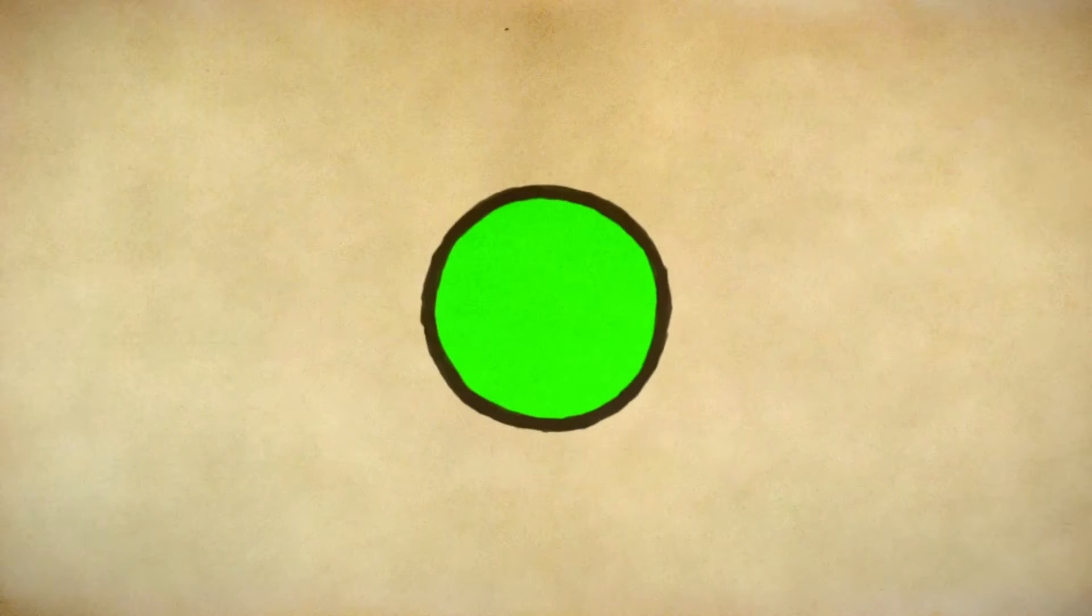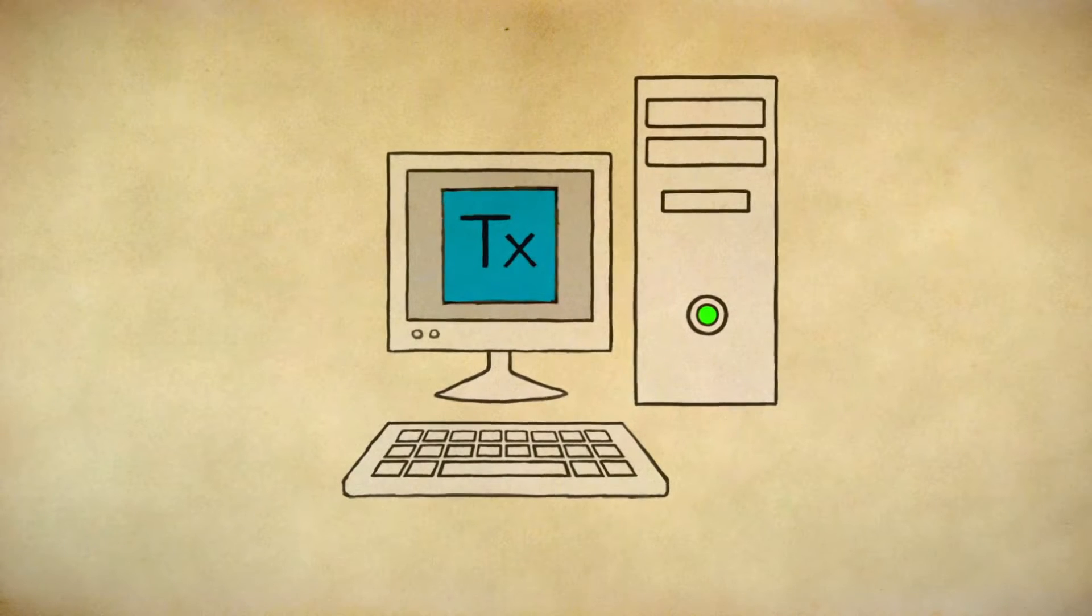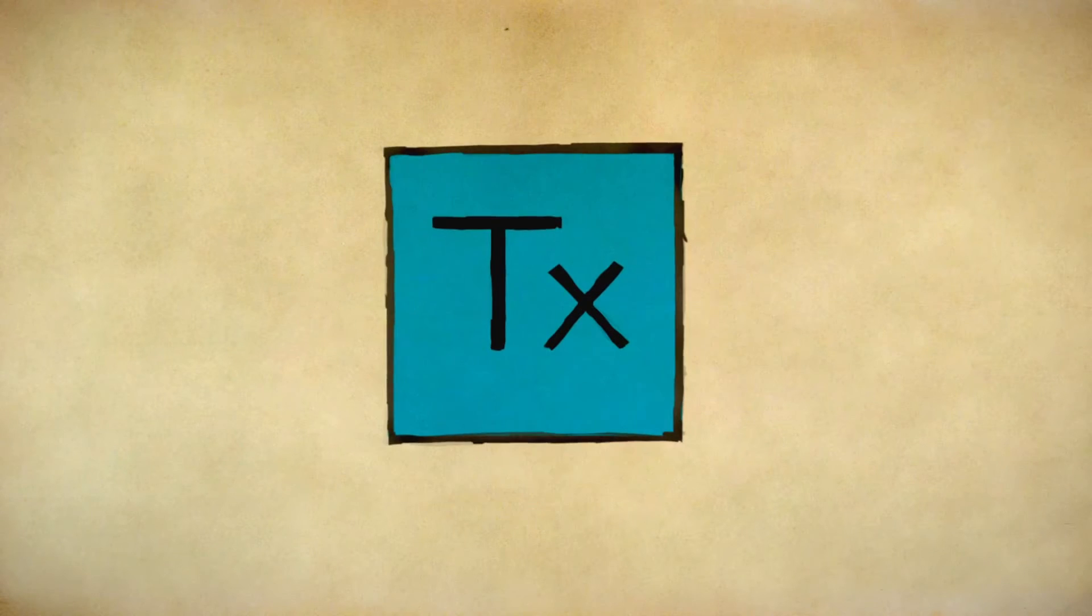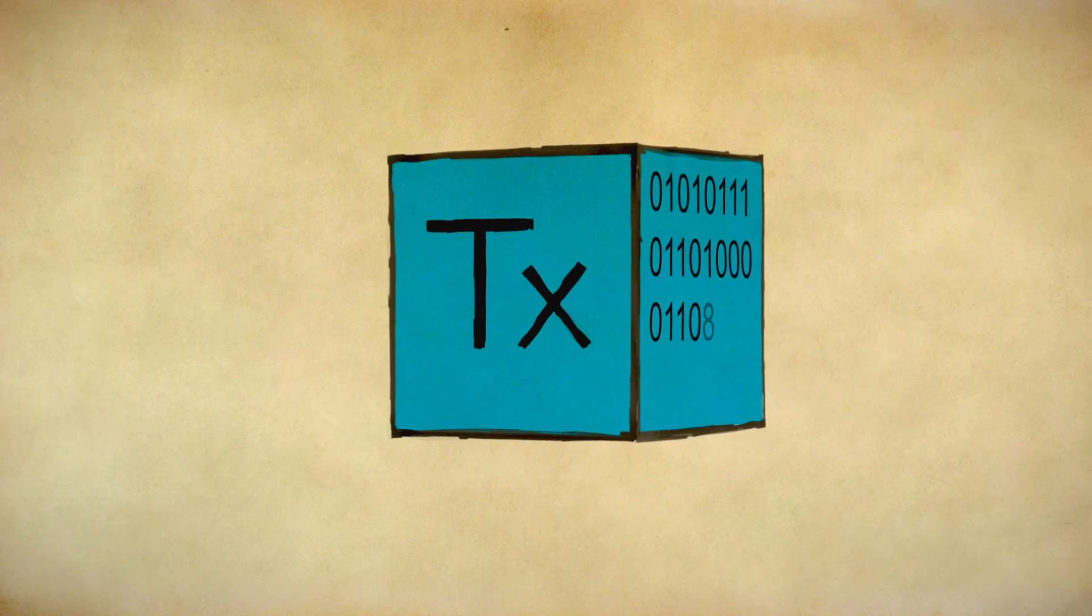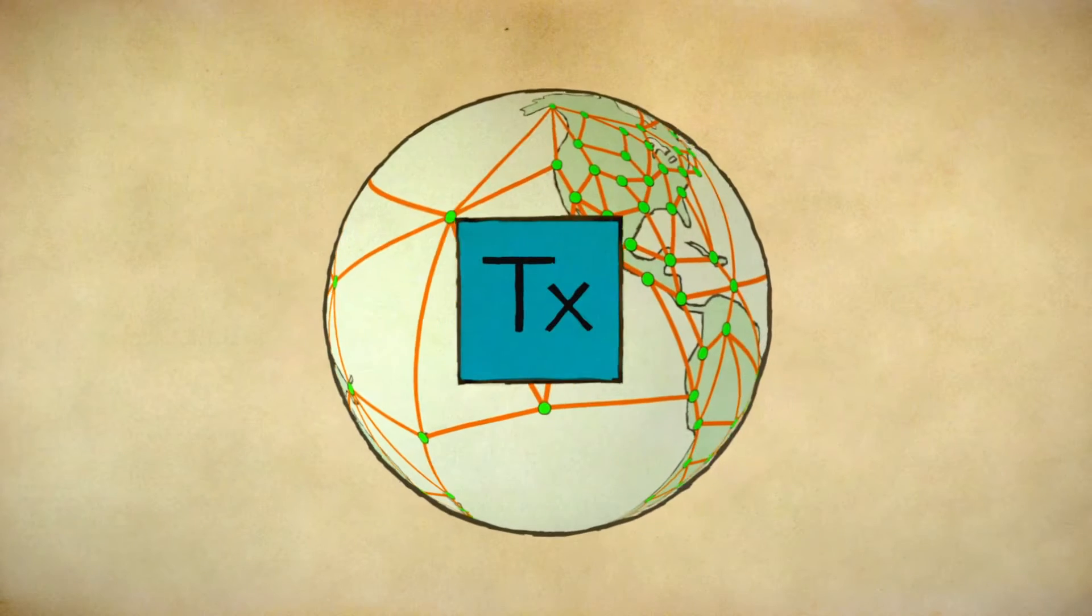Every node, even yours, validates the transaction and ensures it follows all the rules. Bitcoin has a built-in limit of one megabyte data per block, or seven transactions per second. The transaction then goes onto one blockchain.